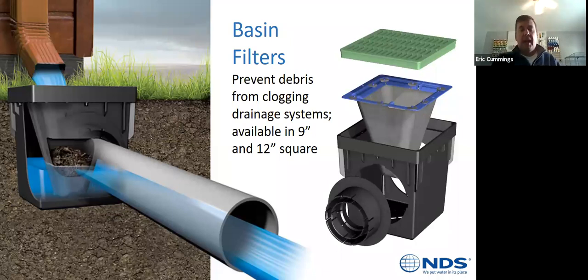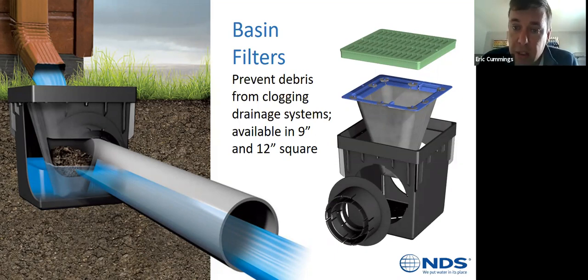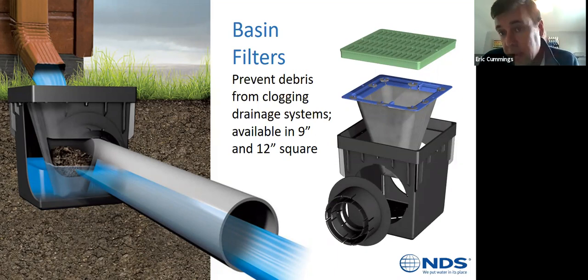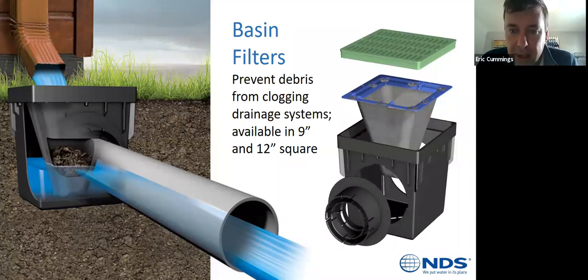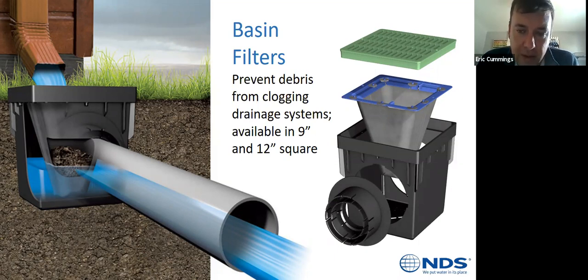Basin filters are something you shouldn't overlook. We make them for nine and twelve-inch square catch basins. Any debris that makes it off the roof and through the grate that could back up your system will get caught in that filter. They keep the system clean and also create a maintenance revenue opportunity — when doing fall cleanup, you can take these out, shake them clean, and charge an extra fee to clean out all the catch basins throughout the property.